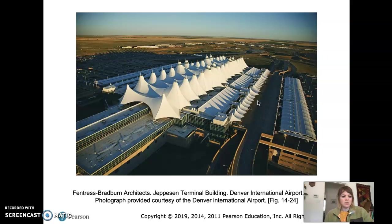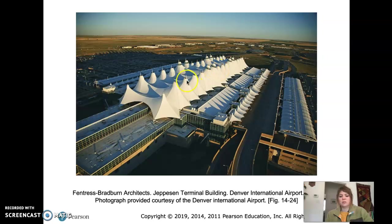This is the Jeppesen Terminal Building in Denver at the International Airport, built in 1994 by the Fentress Bradburn Architects. It's a giant tent-like structure composed of 15 acres of woven fiberglass. It's one of the largest suspension buildings in the world, and the white roofing material lets in a lot of natural light without conducting heat. It's coated with Teflon so that it's water resistant and easier to clean. The design is actually inspired by the snow-capped Rocky Mountains nearby.